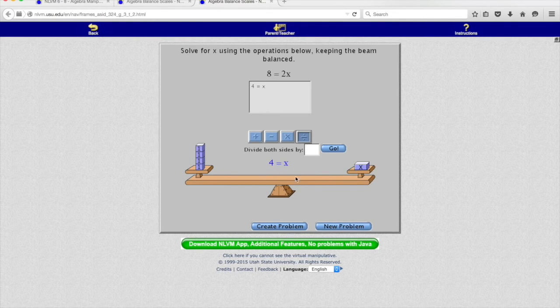That's the basic idea behind the balance scales. Again, we're just doing opposites. In this case, the opposite of multiplying by some number, like two, is we divide by two.